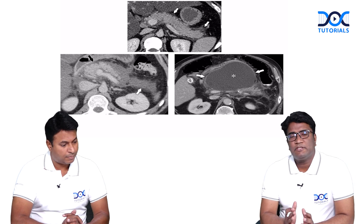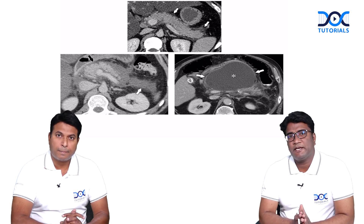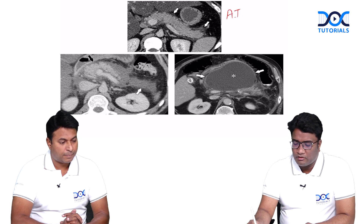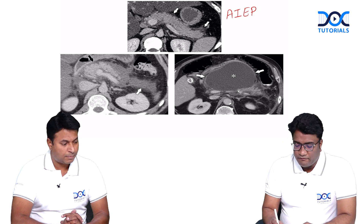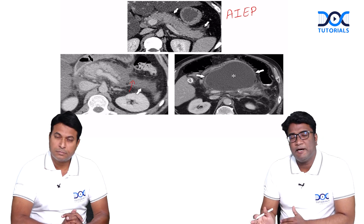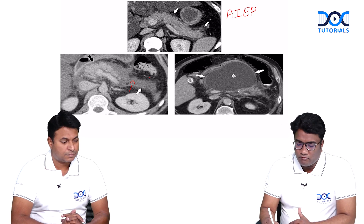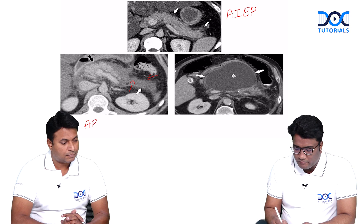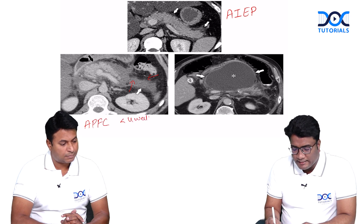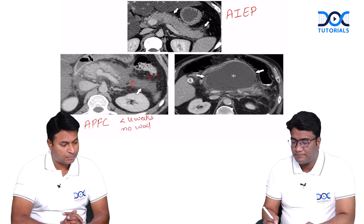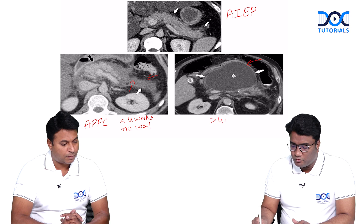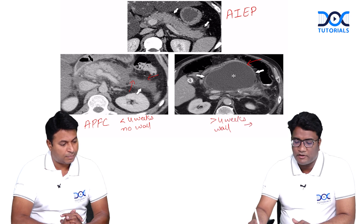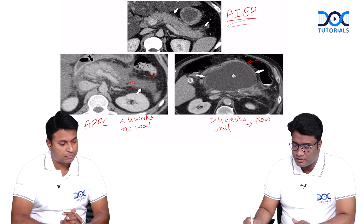There are two categorizations of pancreatitis on radiology. One is acute interstitial edematous pancreatitis, where we have homogenous enhancement but the pancreas is slightly bulky. If you see collections in cases of acute interstitial edematous pancreatitis which are less than four weeks without any kind of wall around them, this is called acute peripancreatic fluid collections — they don't have any wall. The moment we see a homogeneous collection in the peripancreatic areas with a well-defined wall, developing usually after four weeks, in a case of acute interstitial edematous pancreatitis, this is your pseudocyst.